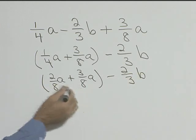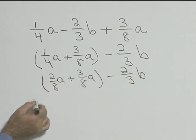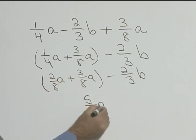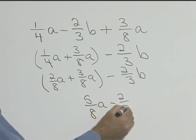And since we have the same denominators here and the same variable attached, we can add these. We can say 2 plus 3 eighths will give me 5 eighths A minus 2 thirds B.